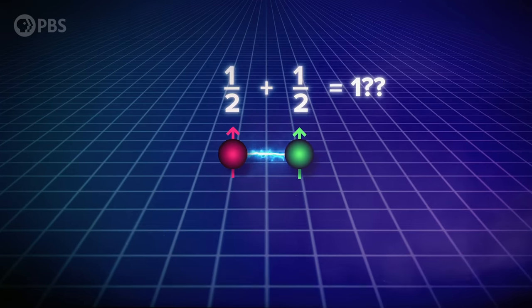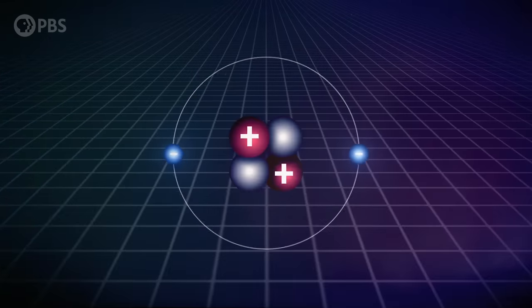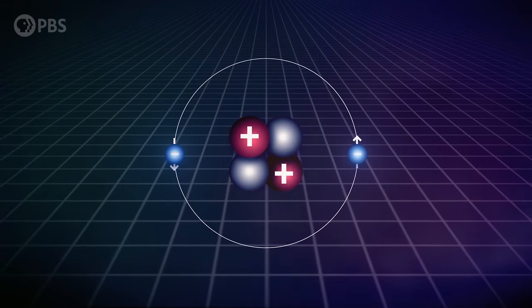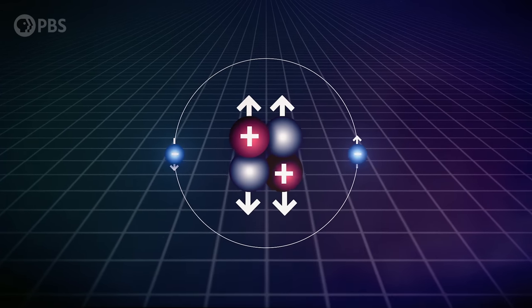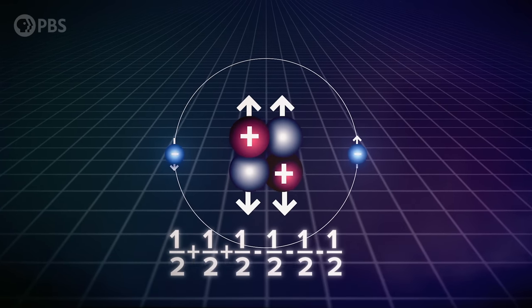Or take the helium-4 atom. It has two protons, two neutrons, and two electrons, all spin-half particles. In this case, three is spin +1/2 and three is spin -1/2,